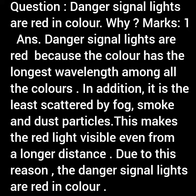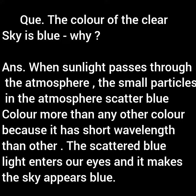Next question: the color of the clear sky is blue — why? Here also you may get one or two marks. Answer: When sunlight passes through the atmosphere, the small particles in the atmosphere scatter blue color more than any other color because it has a shorter wavelength than other colors. The scattered blue light enters our eyes and it makes the sky appear blue.